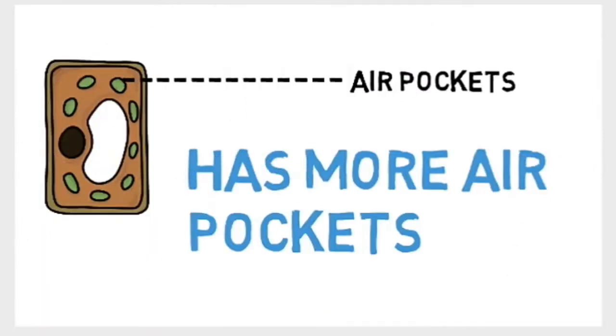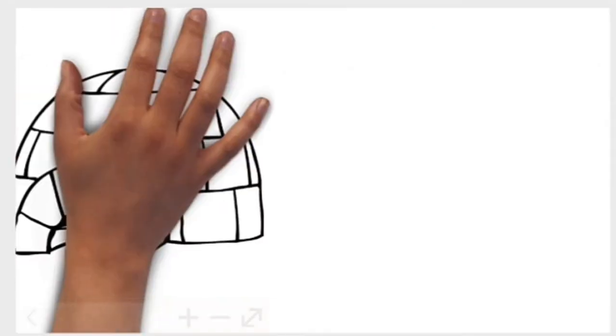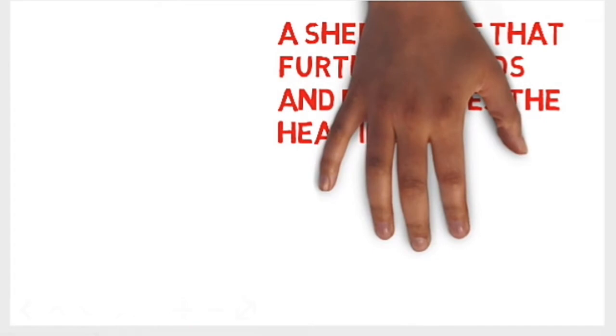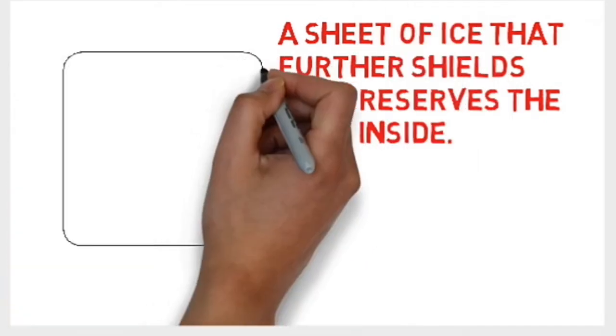It possesses multiple air pockets, while the exterior of the blocks remain as such. The interior face of the blocks is commonly melted due to the warmth generated in the interior, creating a sheet of ice that further shields and preserves the heat inside.